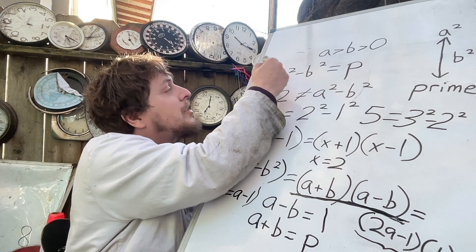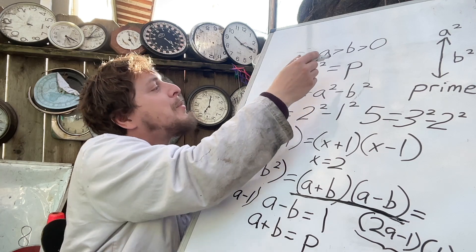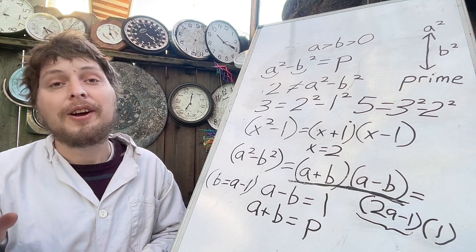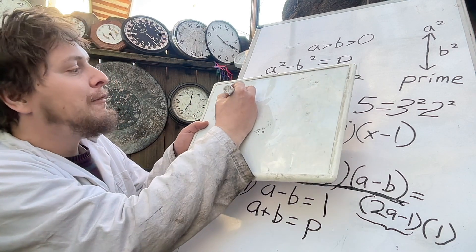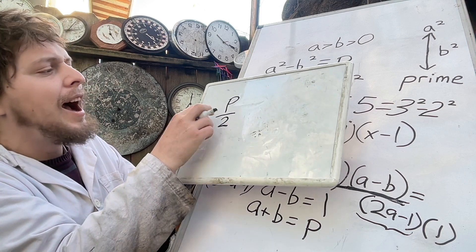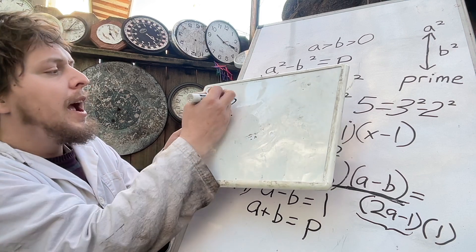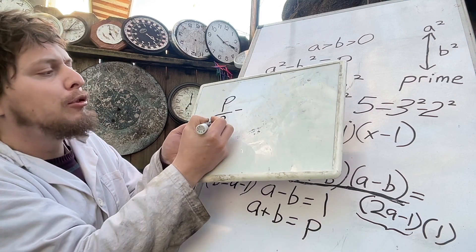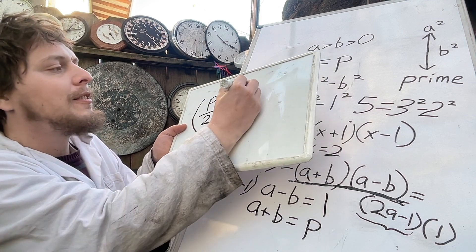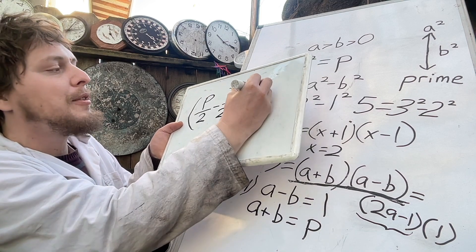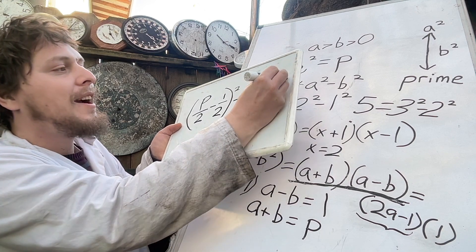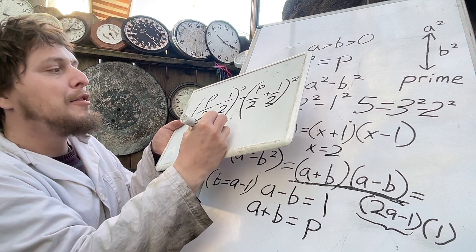Two squares whose positive roots are neighboring whole numbers that add up to the prime. To be specific, for an odd prime, if we take it divided by two, that's going to be halfway between two whole numbers. And if we take the whole number that's prime over two minus one half squared, and then subtract the whole number that's prime over two plus one half squared, that will equal the prime.